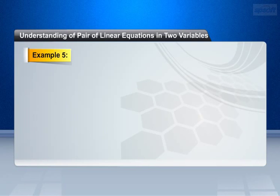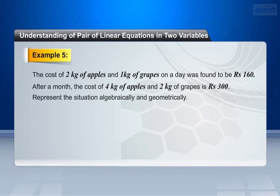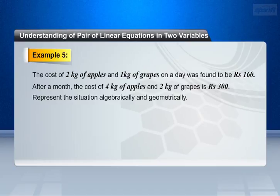Let us see another example. The cost of 2 kg of apples and 1 kg of grapes on a day was found to be 160 rupees. After a month, the cost of 4 kg of apples and 2 kg of grapes is 300 rupees. Represent the situation algebraically and geometrically.